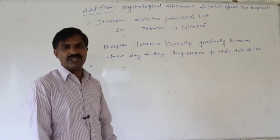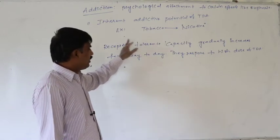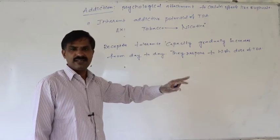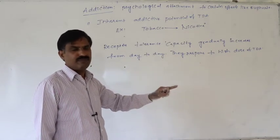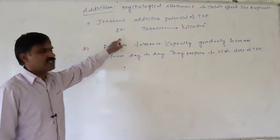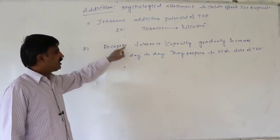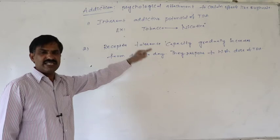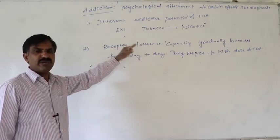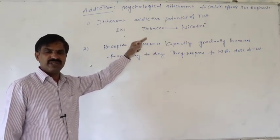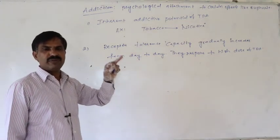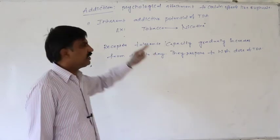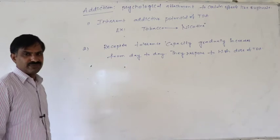Definitely, whenever a person continuously consumes TDA, the receptors for TDA — their tolerance capacity gradually increases. After some time they respond only against a high dose of TDA, so the person tries to consume high dose TDA, and finally that leads to addiction. That is the second reason.